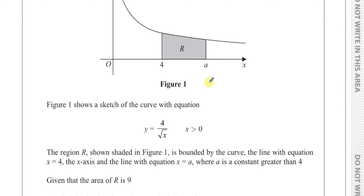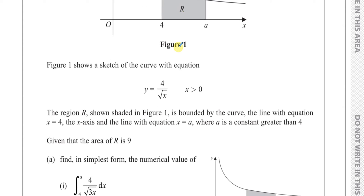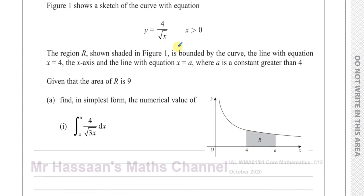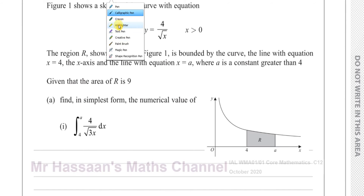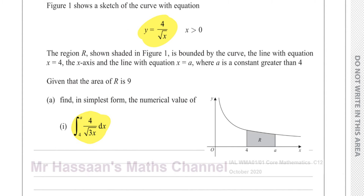Given that the area of R is nine units, so the area of this section between a and four of the function four over root x is equal to nine — that's what they've told us. So I know that this area is equal to nine.